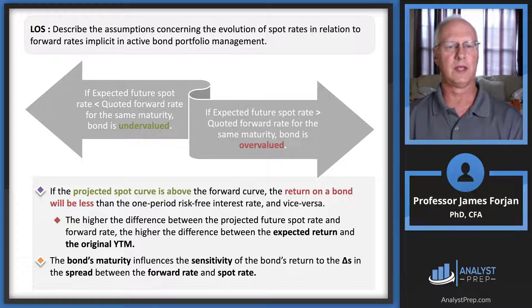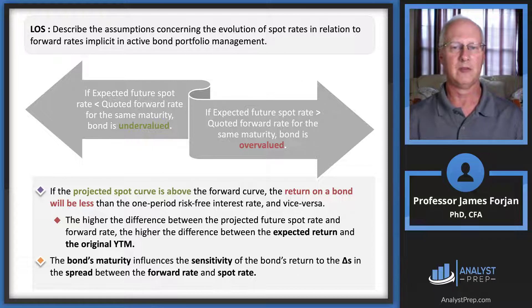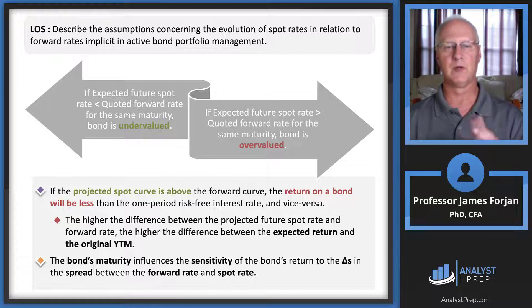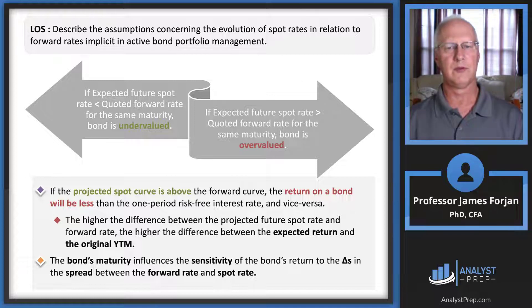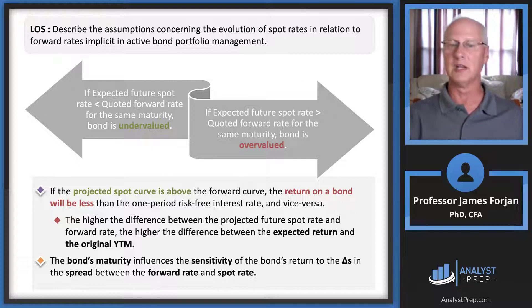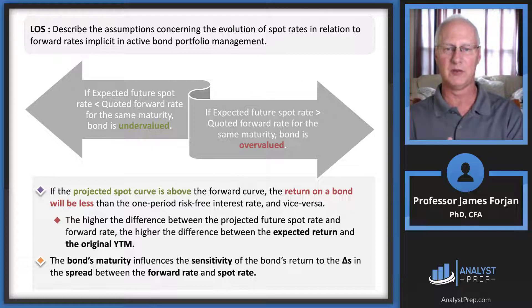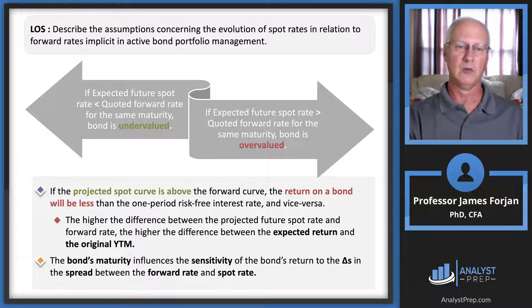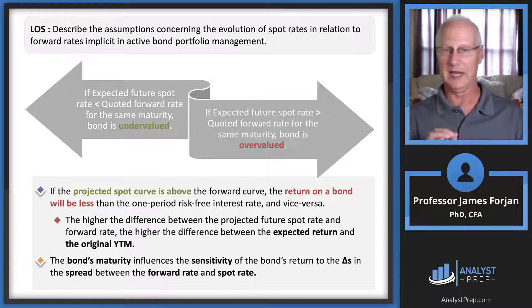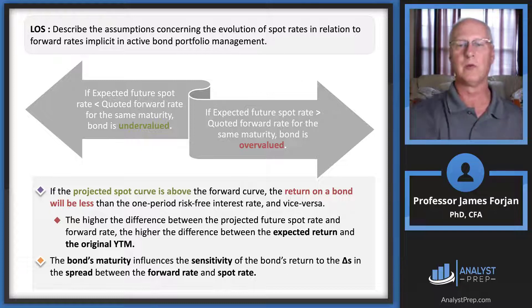If the projected spot curve is above the forward curve, the return on a bond will be less than the one-period risk-free rate of interest, and vice versa. Additionally, the bond's maturity influences the sensitivity of its return — as we know from Level One, that sensitivity is a function of maturity, which is related to duration and convexity, topics we'll revisit in a later reading.